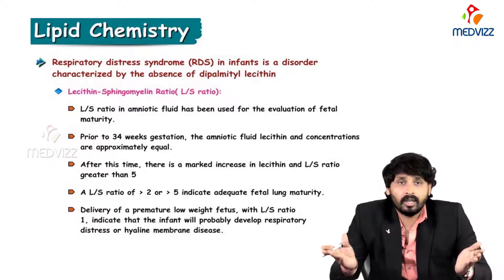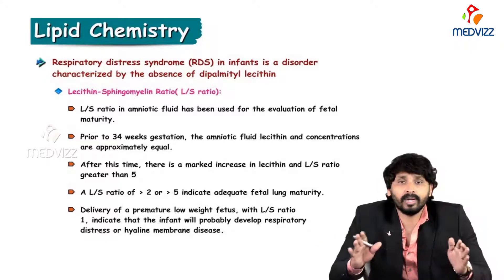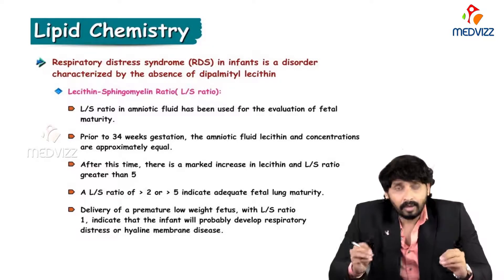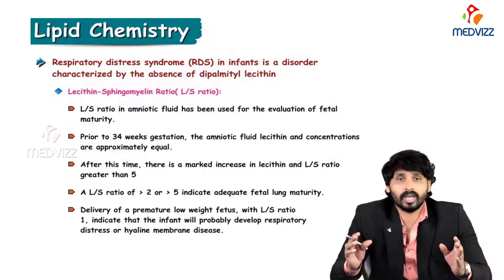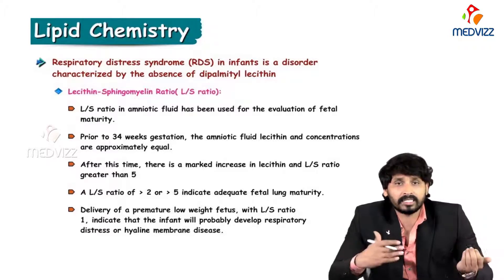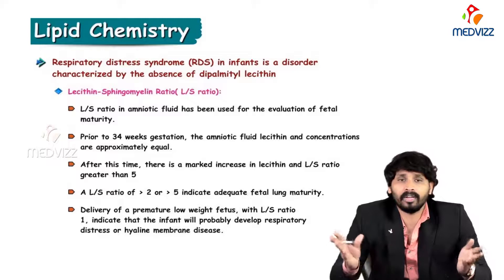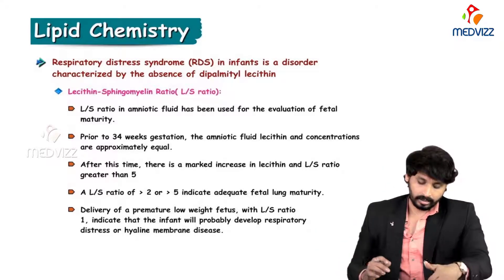An L/S ratio of 2 or greater, up to 5 to 1, indicates adequate fetal lung maturity. By the level of lecithin you can assess lung maturity. Delivery of a premature, low-birth-weight infant with an L/S ratio less than 1 indicates the infant will probably develop respiratory distress syndrome, also known as hyaline membrane disease.